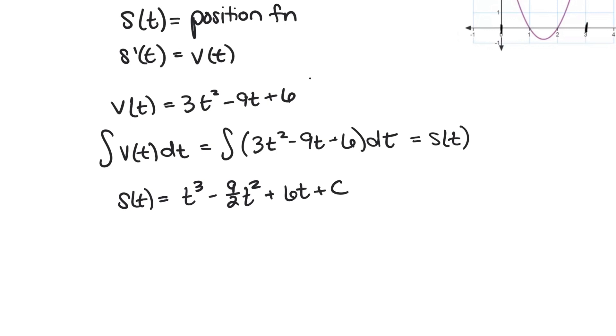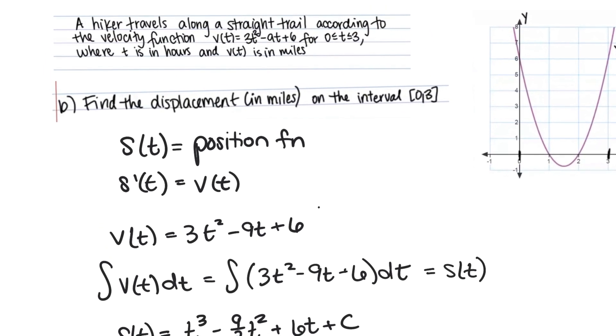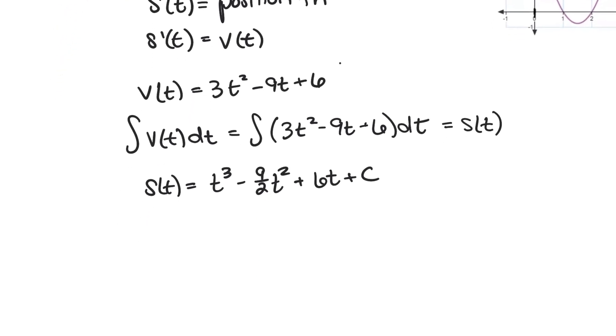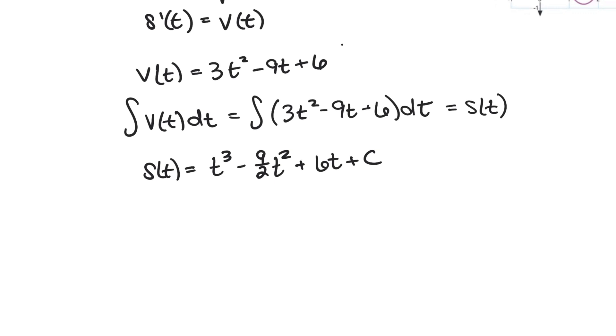Now here's the problem. We don't know what that c should be, but maybe we do because we want to say that the position of the hiker when they started the hike was at 0. So if we assume that the initial position was at 0 then we can say that s(0) should equal 0, so then c would be 0 and we could say our position function was t cubed minus 9 halves t squared plus 6t.